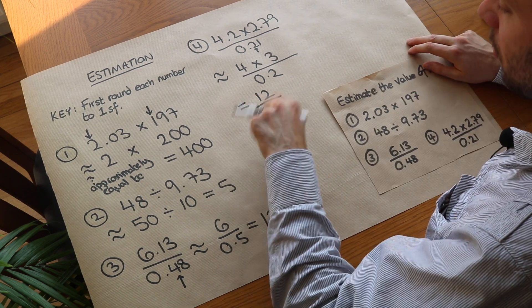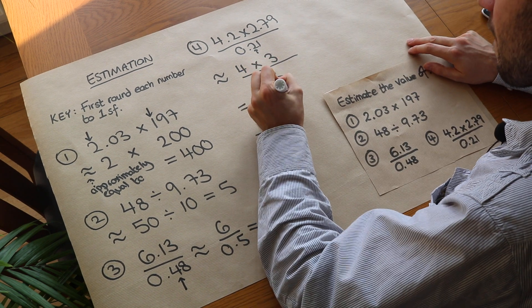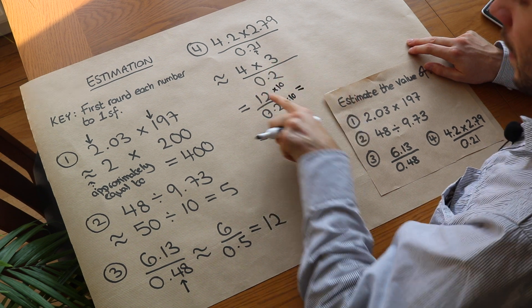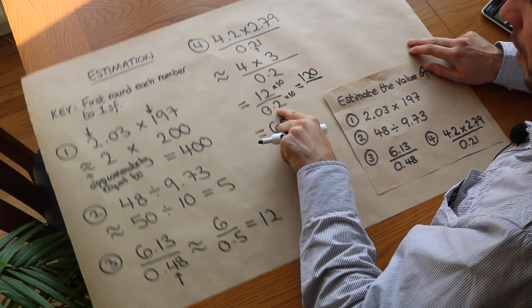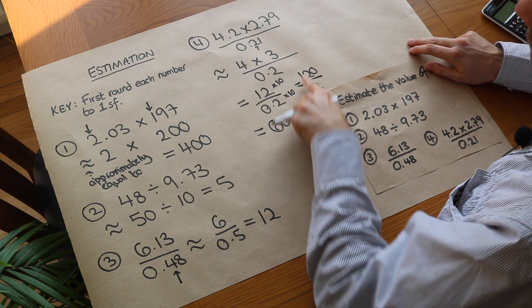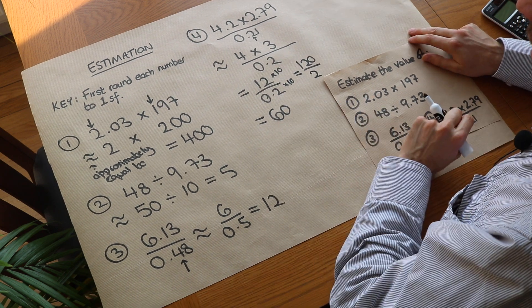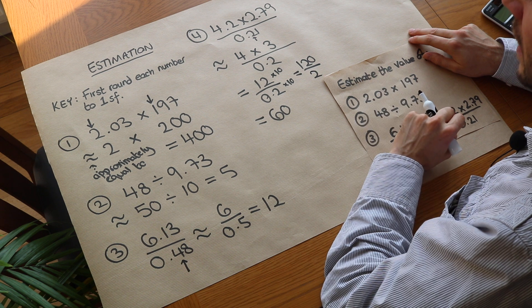Another way of thinking about it is if I was to multiply top and bottom this fraction by 10, then that becomes 120 divided by 2, and we can see that 120 divided by 2 is just 60. So that might be a slightly easier way to do it.